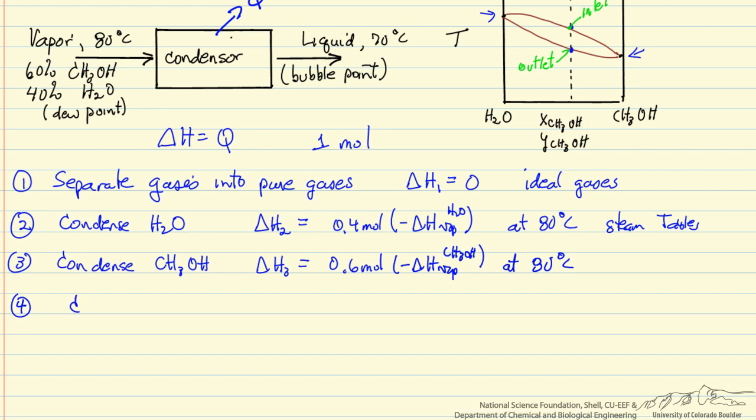Our next step is to cool liquid water from 80 degrees to 70 degrees, because our outlet temperature is 70 degrees, delta H4. Then we have 4 tenths of a mole times the heat capacity of liquid water, 70 minus 80, and we could look this up in steam tables or use a constant heat capacity, which is a pretty good approximation for liquid over a small temperature range.